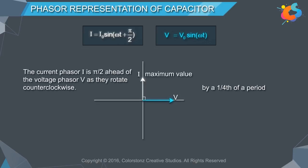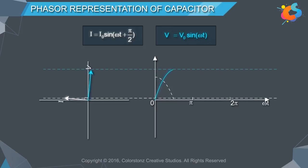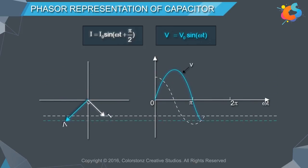Hence, the current phasor I is π/2 ahead of the voltage phasor V as they rotate counter-clockwise. As the voltage and current phasor rotate with angular frequency ω, the sinusoidal curves are generated.